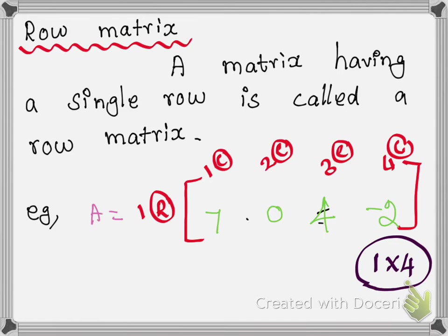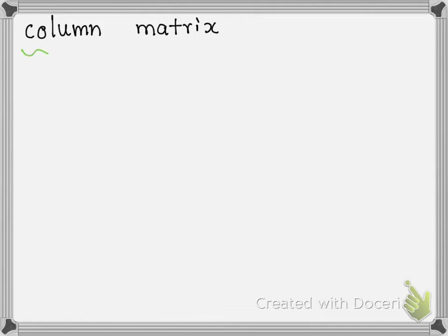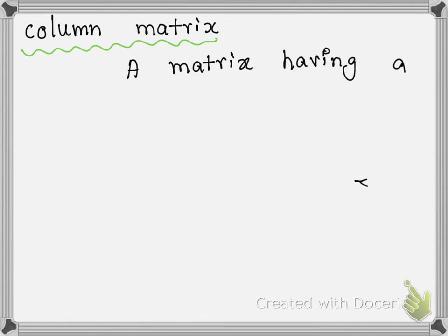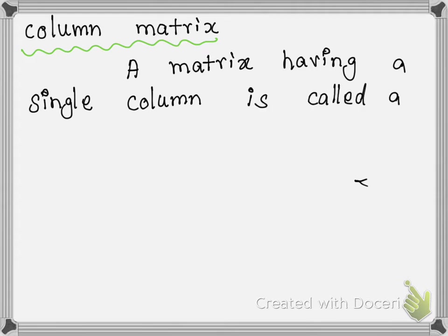A single row with many columns is called the row matrix. Next definition: column matrix. A matrix having a single column is called a column matrix.